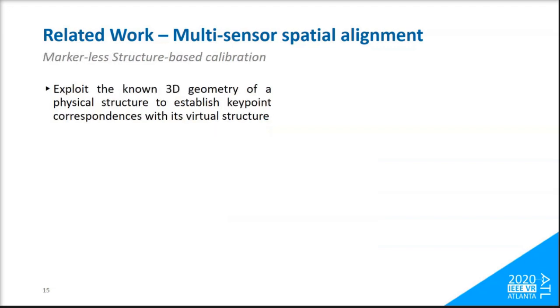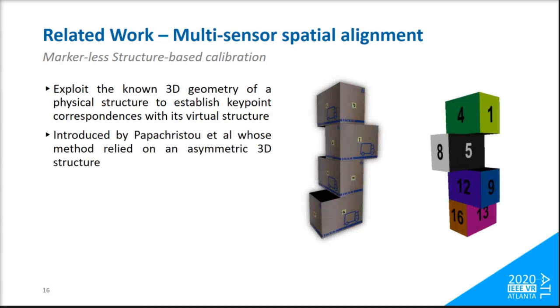Finally, more recently, a novel approach utilized the structure itself only as a volumetric marker. Based solely on the 3D geometry we can achieve markerless calibration. The original work of Papacristou et al. introduced an asymmetric structure in order to calibrate multiple sensors using only depth data.